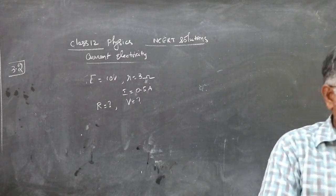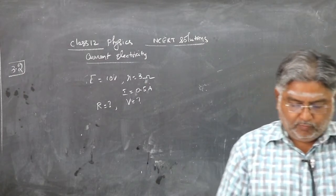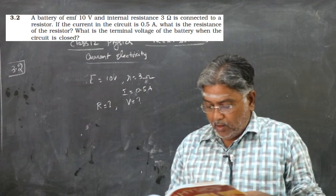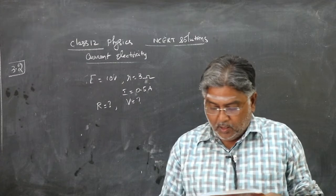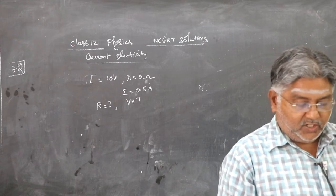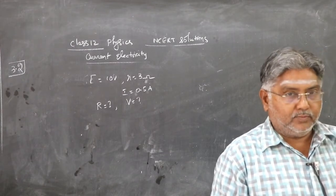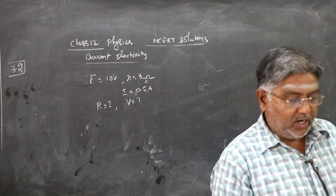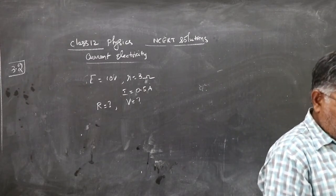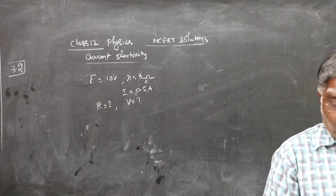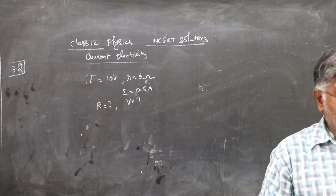Question number 3.2. A battery of EMF 10 volt and internal resistance 3 ohm is connected to a resistor. If the current in the circuit is 0.5 ampere, what is the resistance of the resistor? What is the terminal voltage of the battery when the circuit is closed?